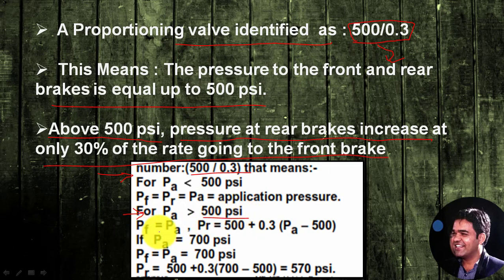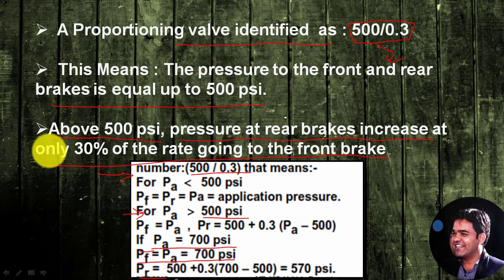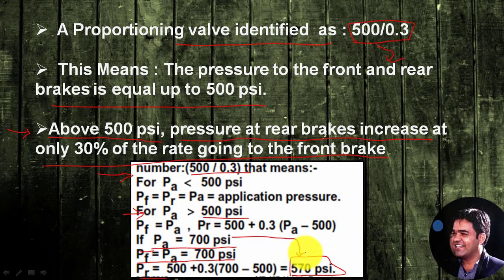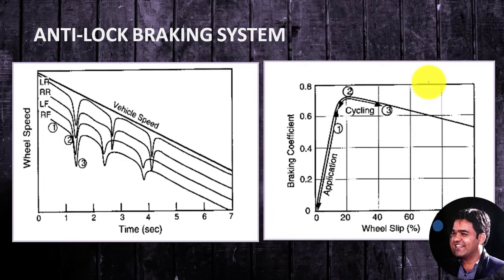For example, if the application pressure is 700 psi (higher than the 500 psi design pressure), the front brake pressure equals the application pressure of 700 psi. The rear brake pressure is reduced: it equals the design pressure of 500 psi plus 30% of the increment above design pressure, i.e., 500 + 0.3 × (700 − 500) = 500 + 60 = 560 psi — which is less than the front brake pressure of 700 psi. This reduction accounts for the forward load transfer that occurs when braking.